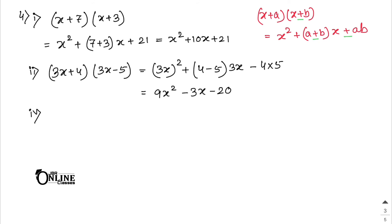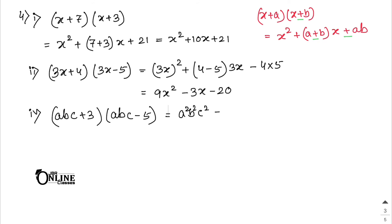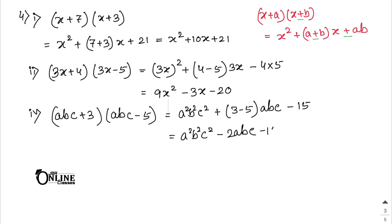Number 4: (abc + 3)(abc - 5) = a²b²c² + (3 - 5)abc - 15 = a²b²c² - 2abc - 15.